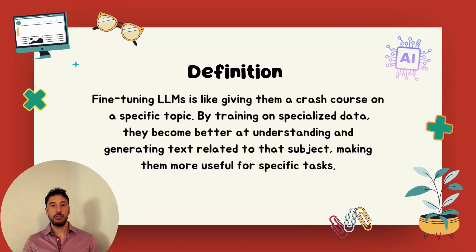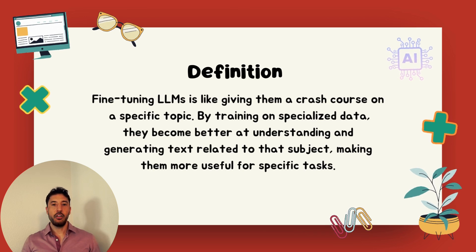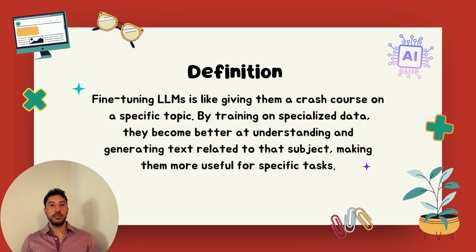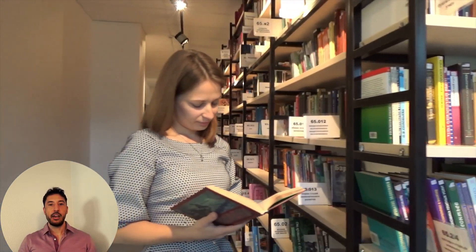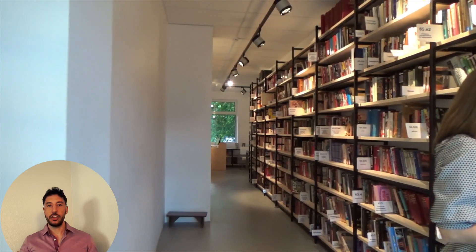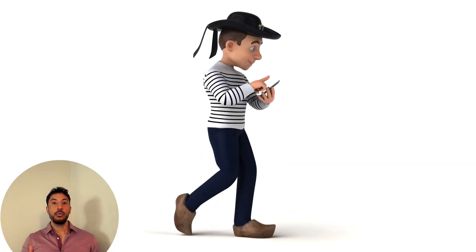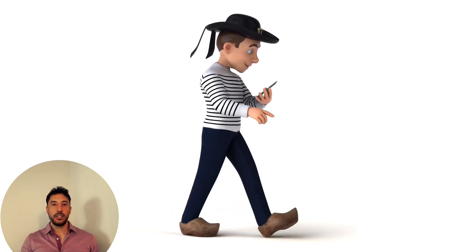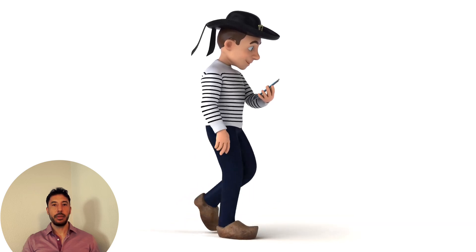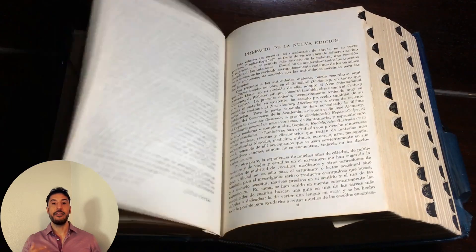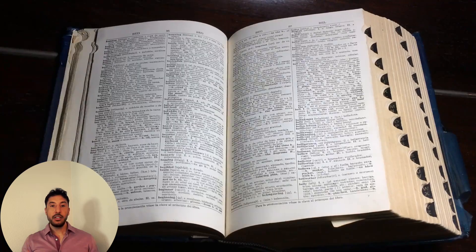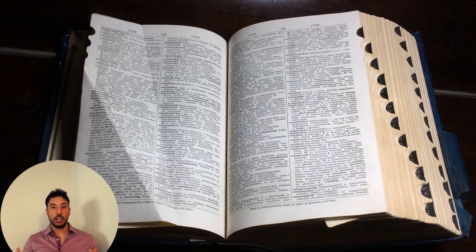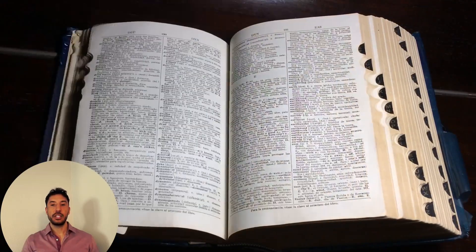Let's compare the overall concept of pre-training and fine-tuning large language models to learning a new language. Think of pre-training as immersing yourself in a new language — imagine you've decided to learn French and you start by immersing yourself as broadly as possible: listening to French music, watching French movies, reading French books. Just as you're absorbing French from various sources without focusing on any specific topic, pre-training involves exposing the model to a vast array of texts from the internet, building a general understanding of grammar, vocabulary, and sentence structure.